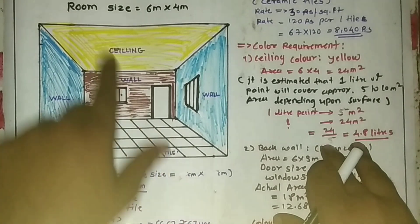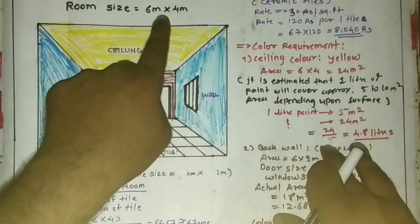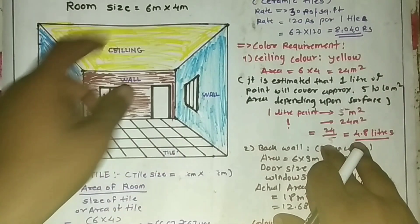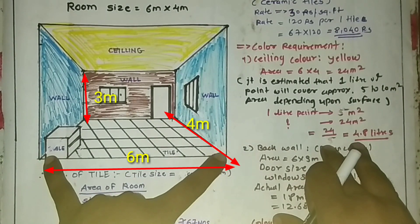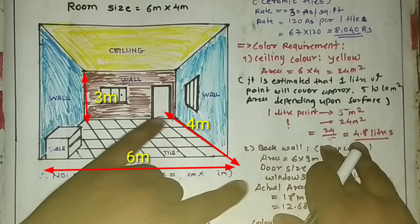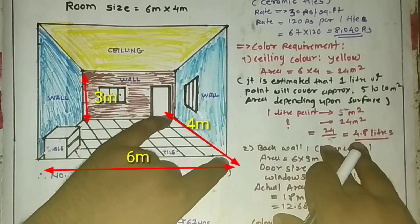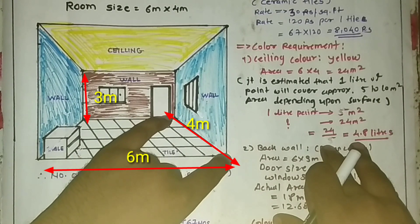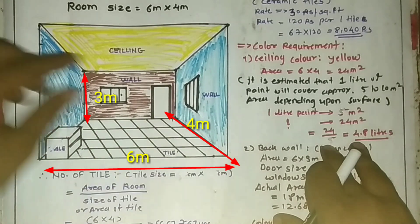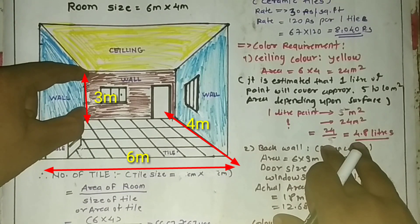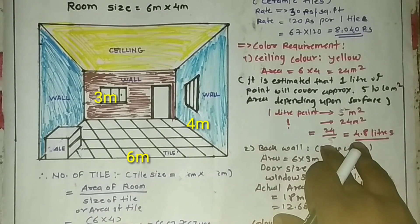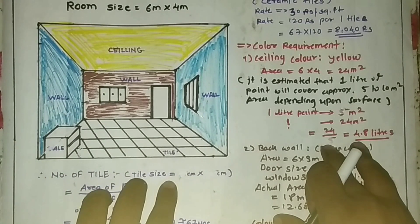First of all, I took one room as an example. The size of this room is 6 by 4 meters — this distance is 6 meters, this distance is 4 meters, and the height is 3 meters as a standard height.